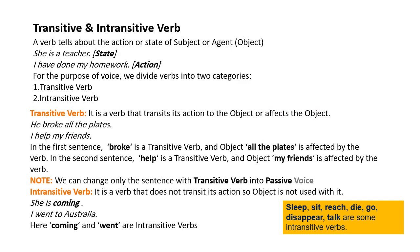Active سے passive voice میں change کرنے کے لیے verb کو سمجھنا ہوگا۔ Verb دو حصوں میں تقسیم ہوتا ہے: transitive verb اور intransitive verb۔ Transitive verb وہ ہوتا ہے جس میں verb کے مفہوم کو پورا کرنے کے لیے object ضروری ہوتا ہے۔ For example: 'He broke' — اس نے کیا توڑا؟ 'He broke all the plates' — تو 'all the plates' object بن گیا۔ Transitive verb کے لیے object بہت ضروری ہے۔